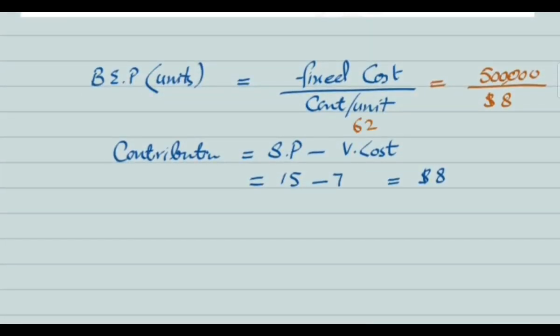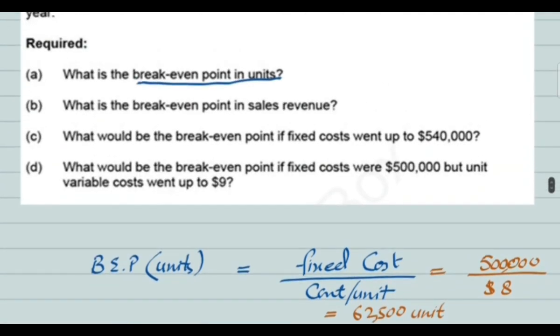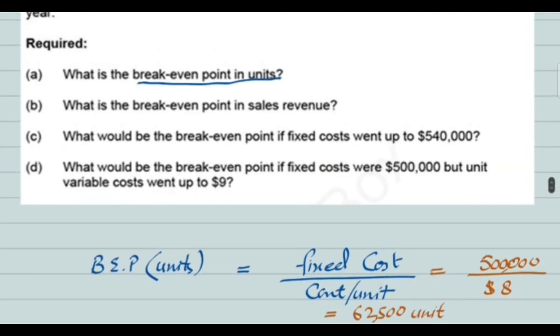So 62,500 units is the answer to the first requirement. If we sell 62,500 units, that is the break-even situation — meaning neither profit nor loss.